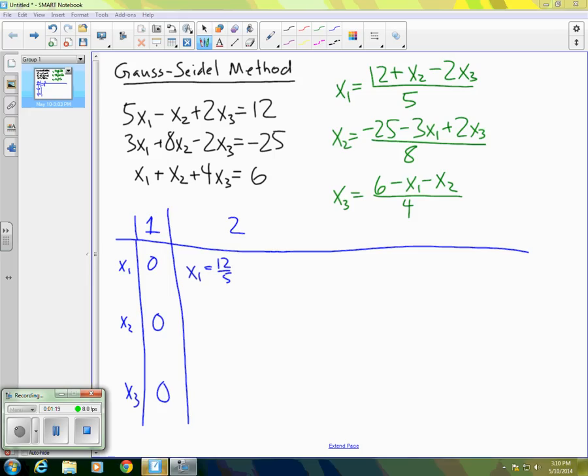But now when we go on to compute x2, we use the green formula up above and to the right, but we now have a new value of x1 rather than zero. So let's use that new value. So we have negative 25 minus 3 times 2.4, which is the most recent value of x1. The most recent value of x3 is zero, so we have two times zero there. And we're dividing by eight. And when we do that, the value we get is negative 4.025.